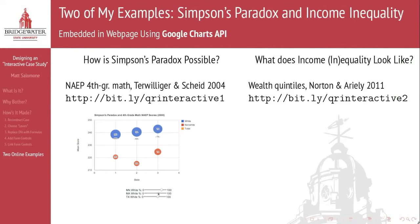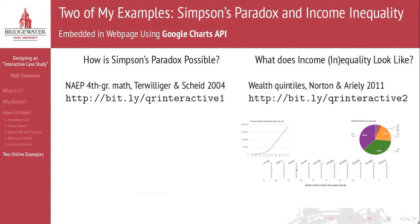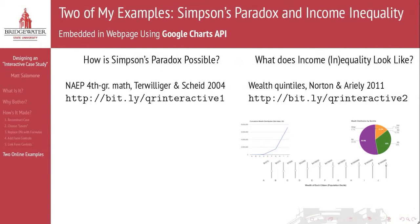If you want to see two more examples of interactive case studies, I have two online embedded in a webpage using a Google Charts API. The first asks how Simpson's paradox is even possible, and the second is an investigation of how to describe income inequality using two different kinds of graphs. Good luck and happy interacting.